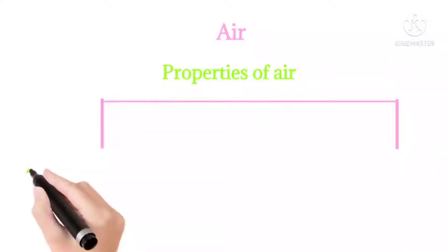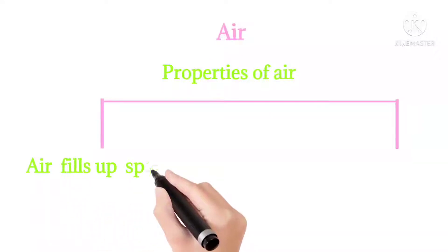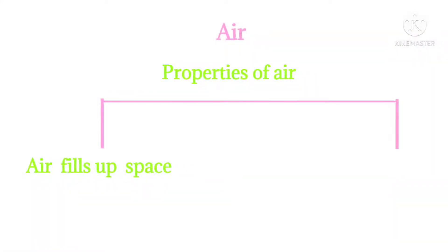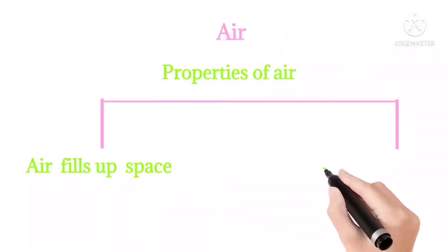What is air? Air is all around us but we can't see it. Air has no color, smell, and taste. We can feel air when it moves. Moving air is called wind. Properties of air: first, air fills up space. What gives shape to a blown-up balloon? When you blow air into the balloon, the air takes up the space inside the balloon and gives the balloon its shape.